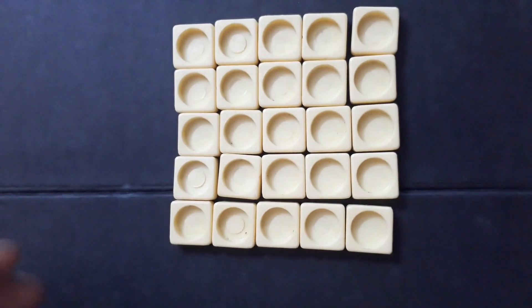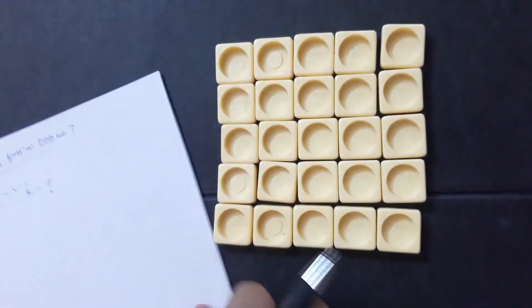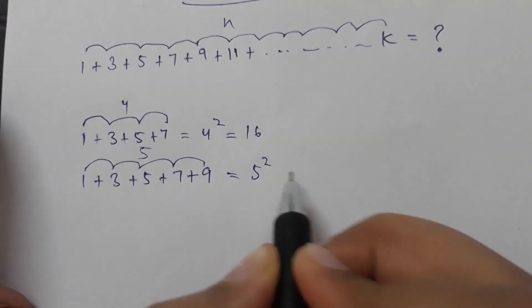Again, it is a perfect square of 5, so the sum of the first 5 odd numbers would be 5 square, that is 25.